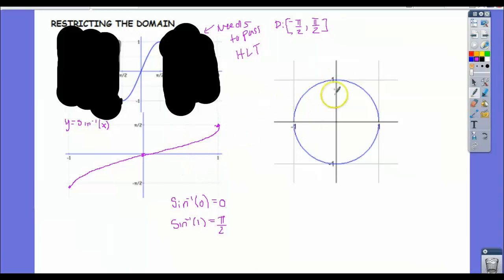Now, what does that mean over here in our unit circle? And this is going to be important later. Here's our unit circle. We're restricting the domain of sine to go from negative pi over 2 to pi over 2. So where is negative pi over 2 over here? Well, it's down here, right? And pi over 2 is up here.